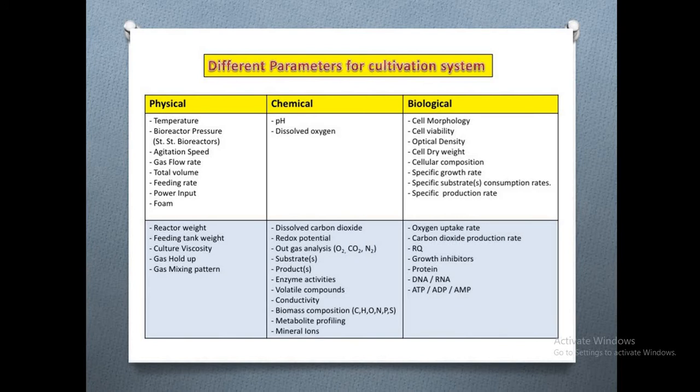Biomass composition is a combination of carbon, hydrogen, oxygen, nitrogen, phosphorus, and sulfur. Metabolic profiling and mineral ions also need to be monitored. The amount of substrate consumed and the amount of product formed has to be calculated throughout the fermentation process.